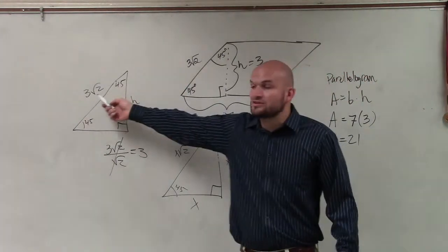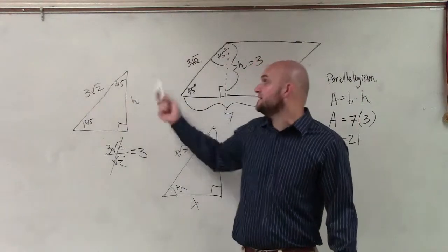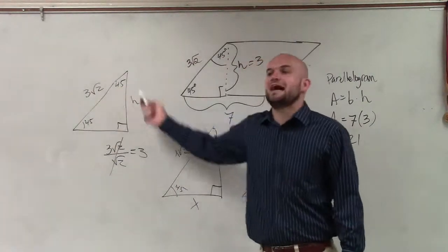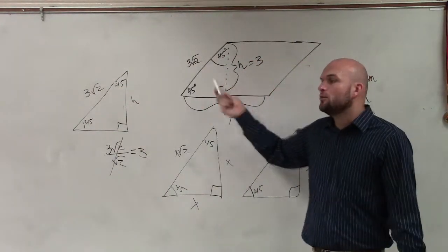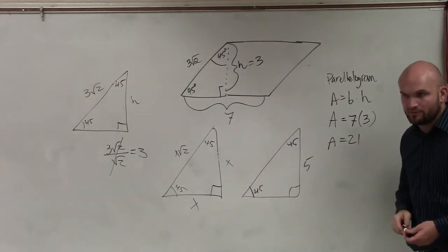But in this case, they only gave us 3 times square root of 2. And then we needed to figure out this. So we divided by the square root of 2 to find our height. Once we knew the height, we plugged it into the formula.